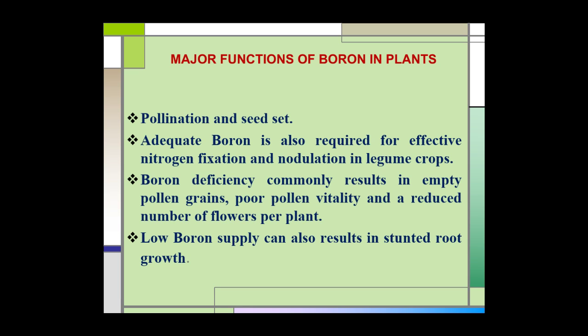Boron deficiency commonly results in empty pollen grains, poor pollen vitality, and a reduced number of flowers per plant. Low boron supply can also result in stunted root growth.